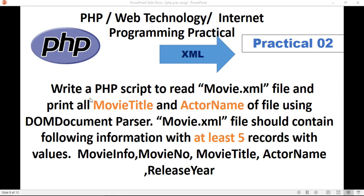The question given is: write a PHP script to read a movie.xml file and print all movie titles and actor names using a DOM document parser. The movie.xml file should contain the following information with at least 5 records. So this is the given question.